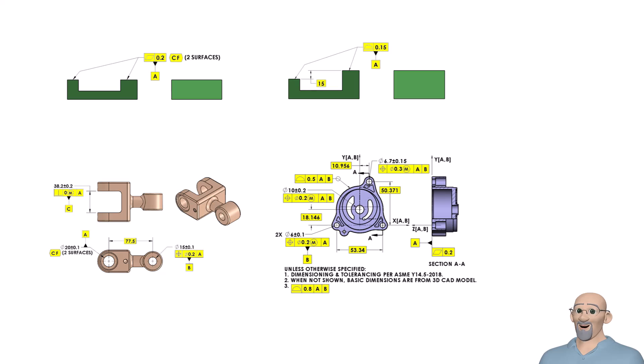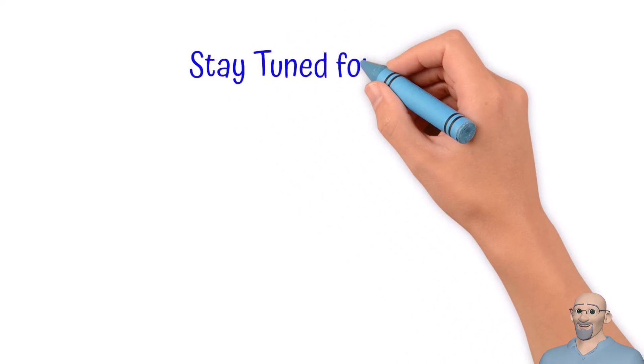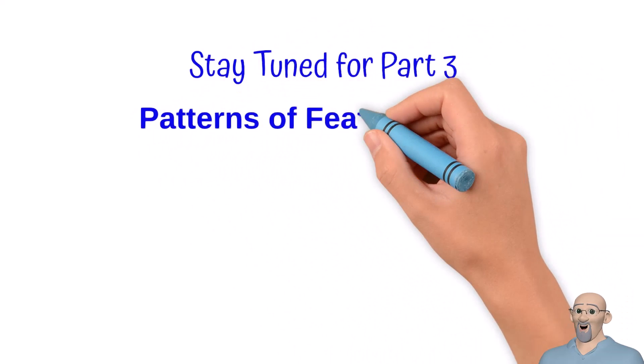In this tip and part one, we discussed several different ways to use patterns of features to establish a datum. In part three, we are going to explore what happens when our features are referenced at MMB and why you may not need to use a pattern to establish a datum.